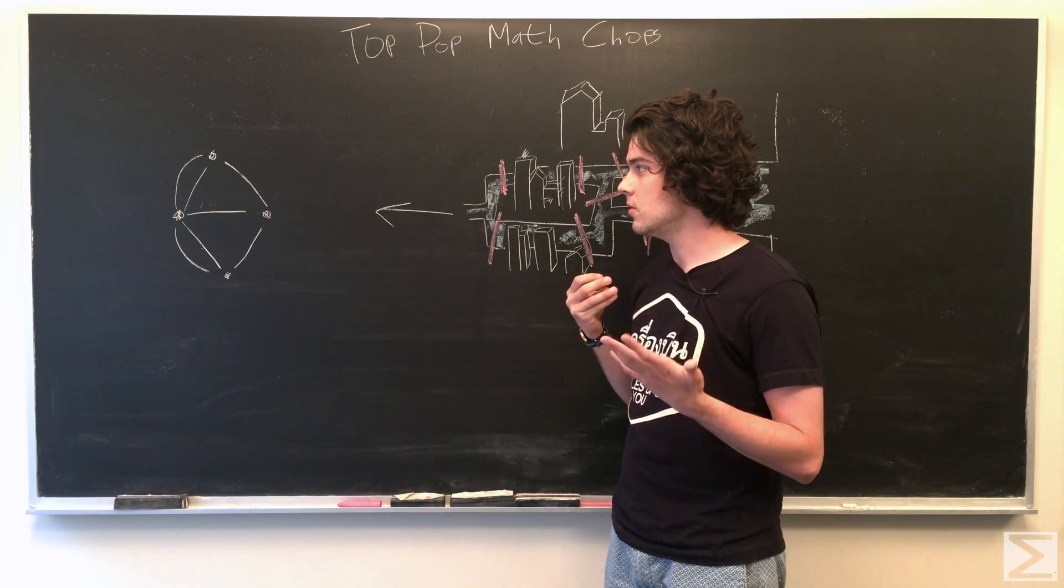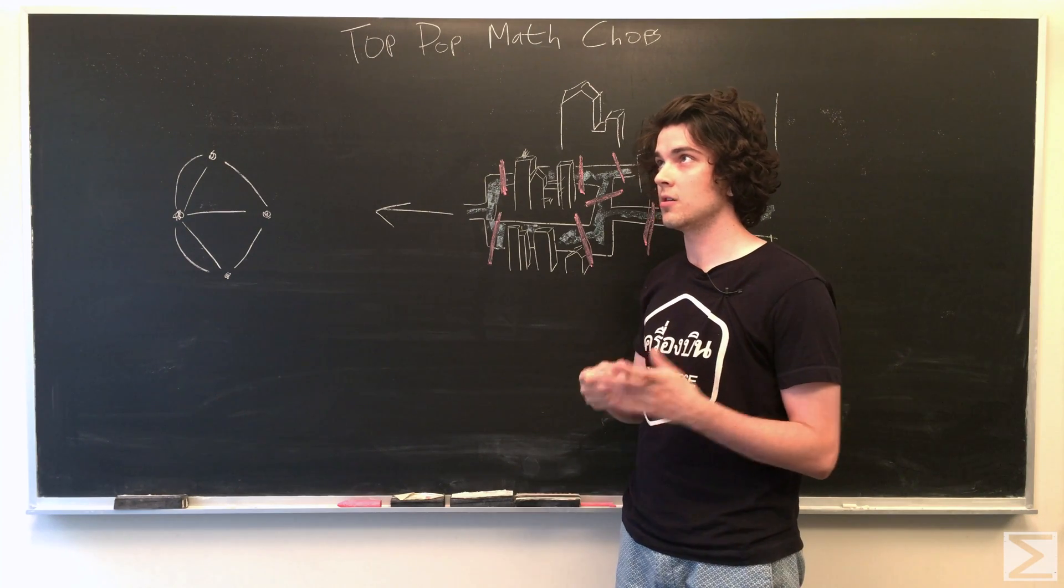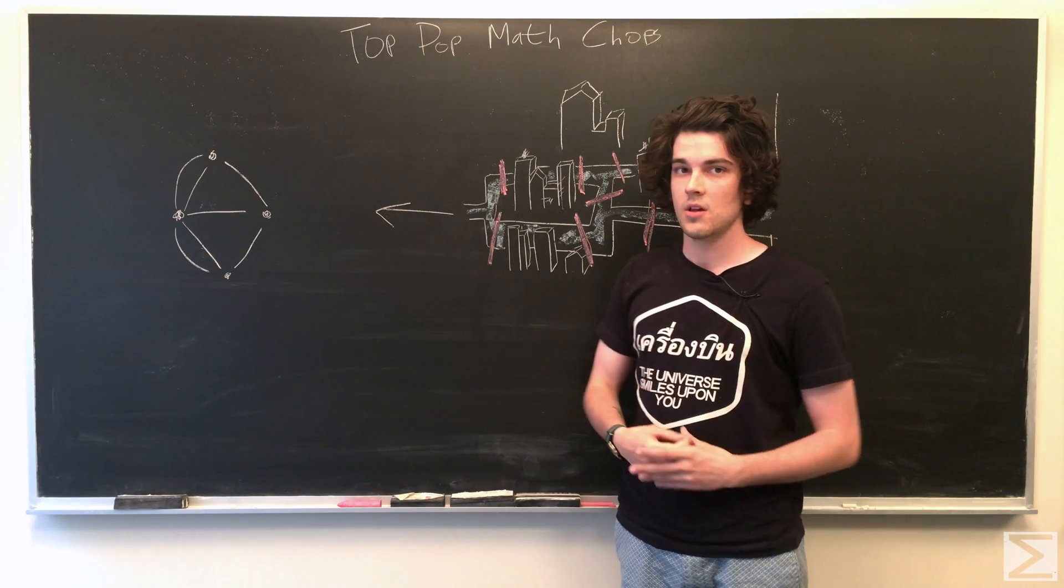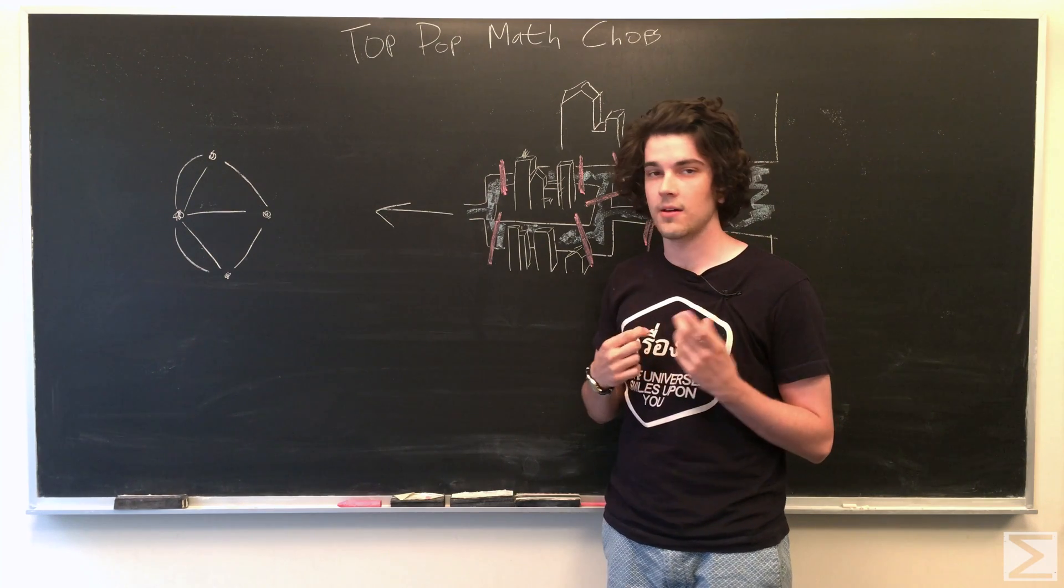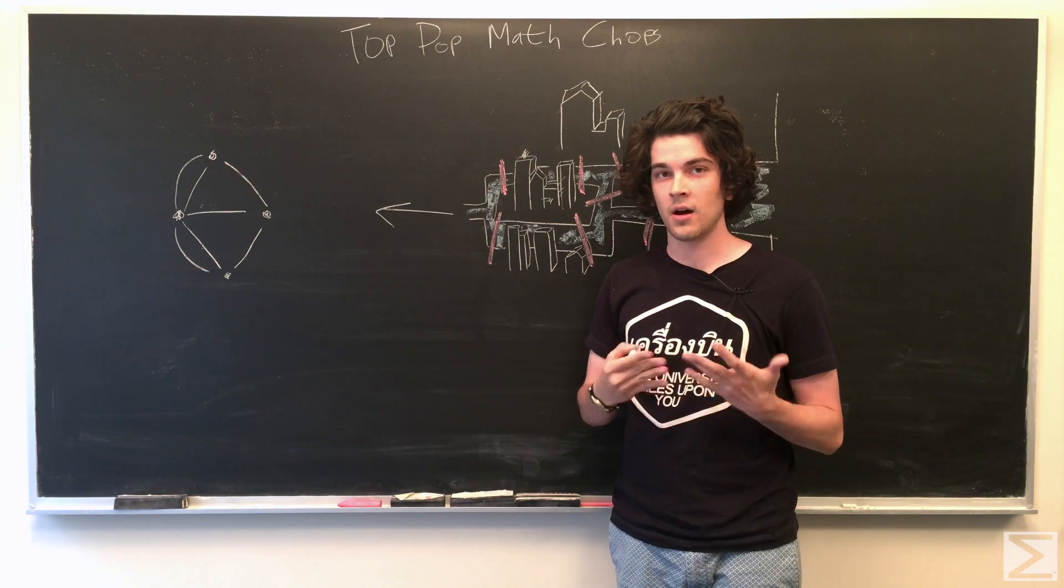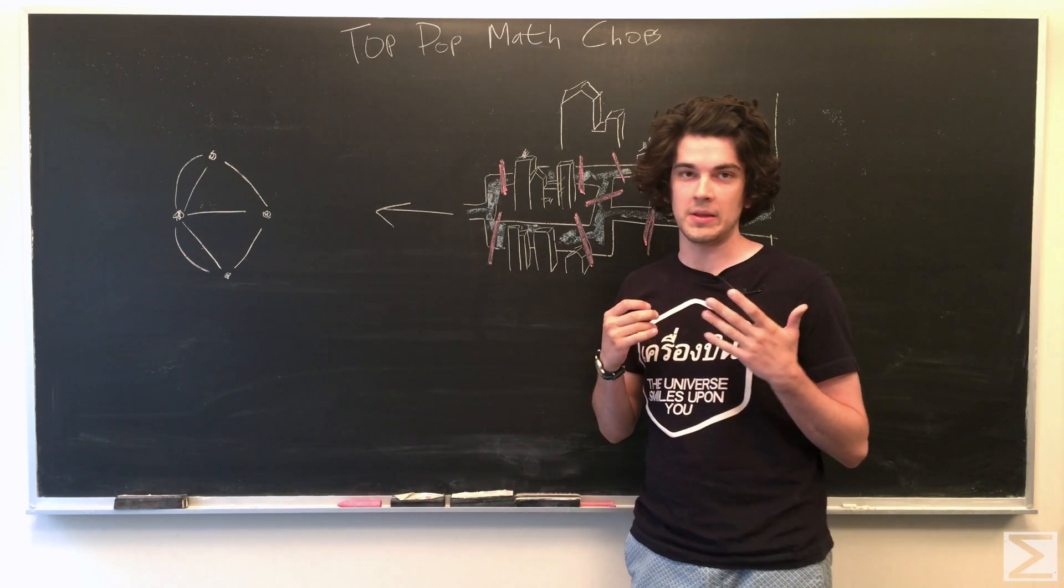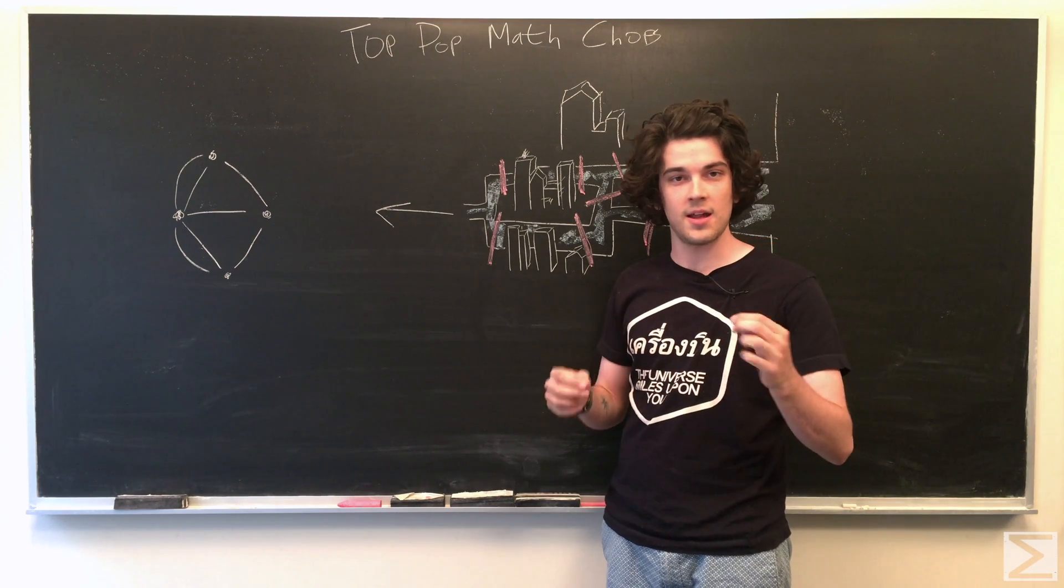So you intuitively need an even degree for all non-terminal vertices. That means there can be two vertices that have an odd degree, which would be the vertices you start and end on.